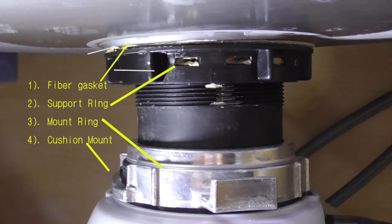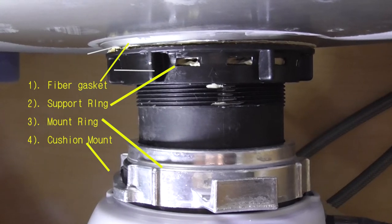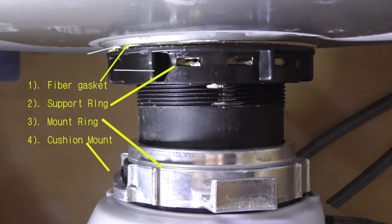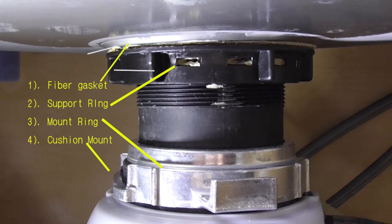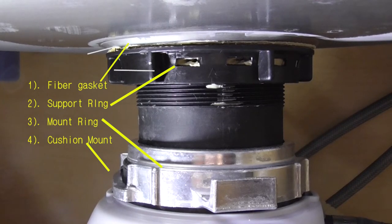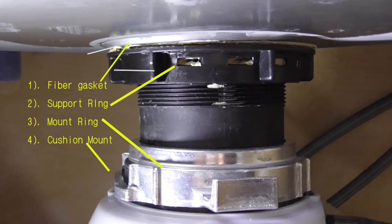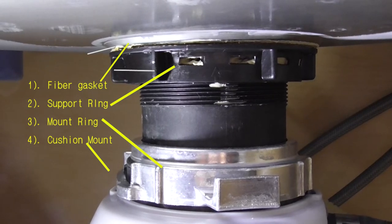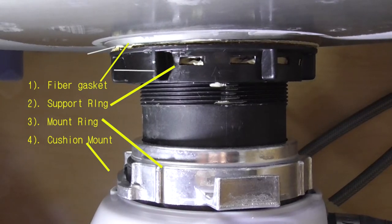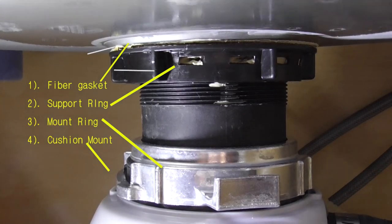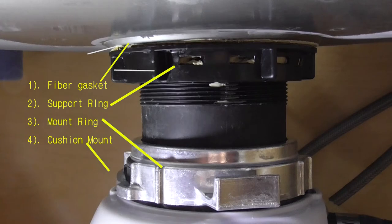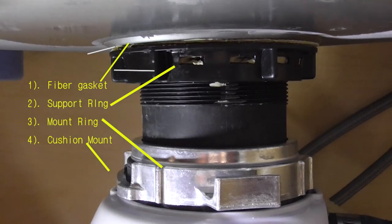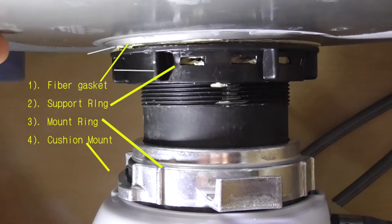Then put the support ring. When you do that, your plumber's putty comes out. Just wipe all the excess from top and bottom as you tighten. Make sure it's very tight, and then put the mounting ring and then the cushion mount as I showed you earlier.